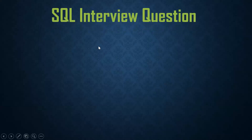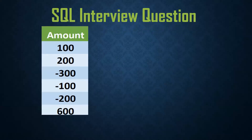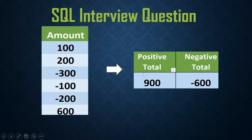Hello, welcome back to my channel Praveen Kumar. Today we'll see one SQL interview question. I have one table with one column containing both positive and negative values. The requirement is to get the positive sum and negative sum separately — for example, 100 plus 200 plus 600 equals 900, and minus 300 minus 100 minus 12 gives minus something. This is one of the frequently asked interview questions.